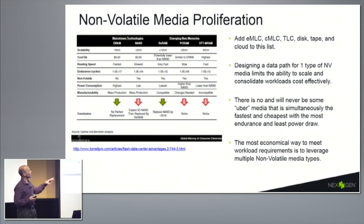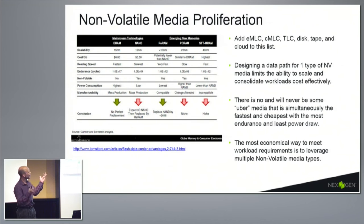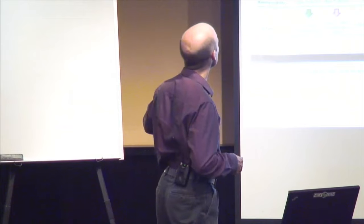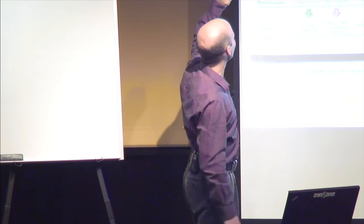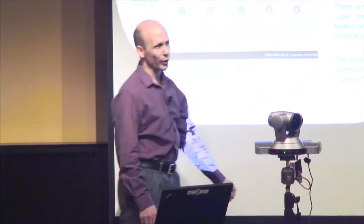We've also got disk drives — 10K, 15K — tape drives, and cloud. On the scalability line, the nanometer figures are 15, 12, less than 10, 25, and 40. Some of these are today's technology, while others are projected — we have a feel for where the technology is going to land, but it's a bit more forward-looking. These are mainstream technologies available today; you can get some components in samples and people are working on them.